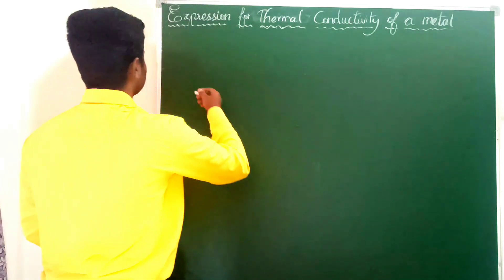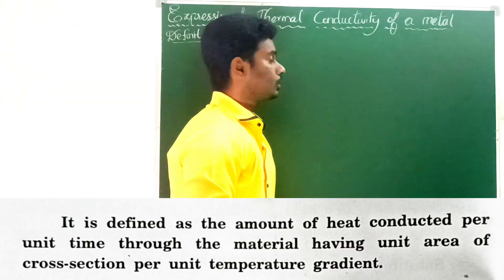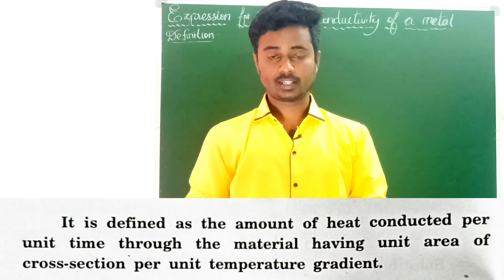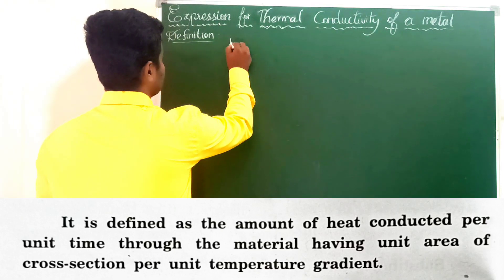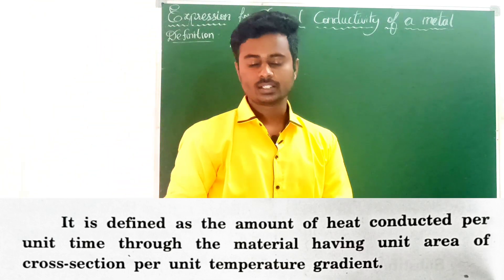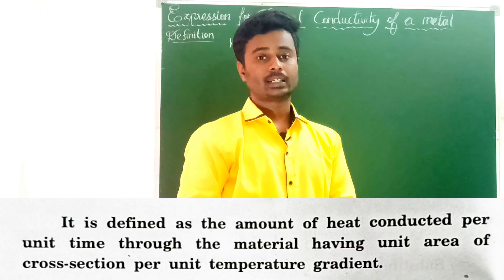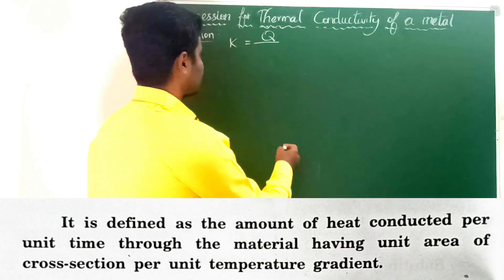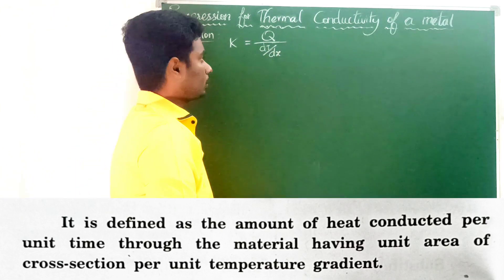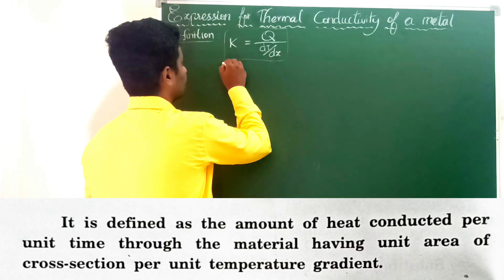Definition: Thermal conductivity of a metal is defined as the amount of heat conducted per unit time through the material having unit area of cross section, per unit temperature gradient. The temperature gradient is dT divided by dx. So the thermal conductivity formula is K equal to Q divided by dT divided by dx.